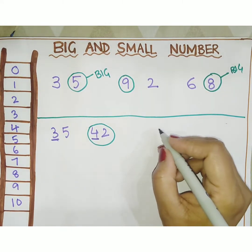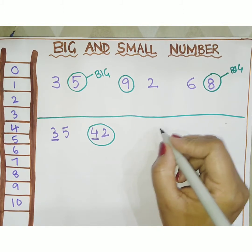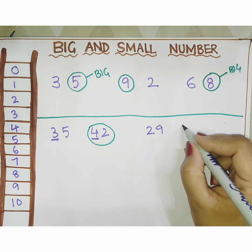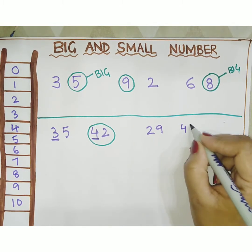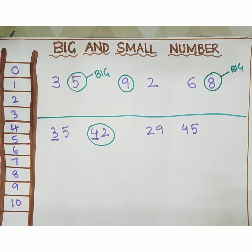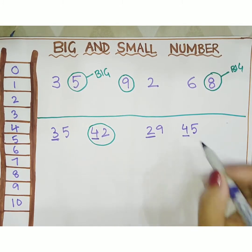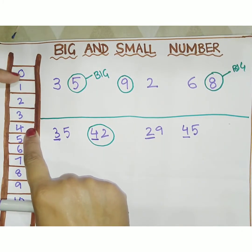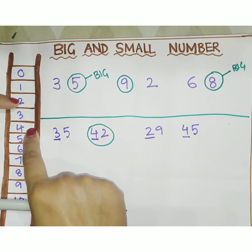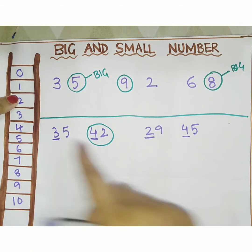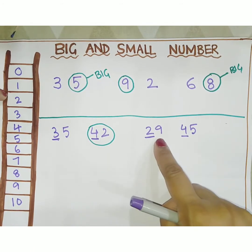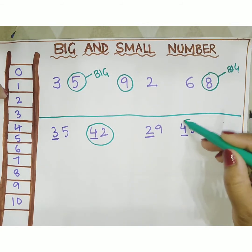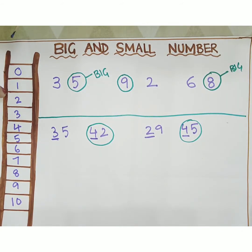Let's understand with one more example. Suppose the numbers are 29 and 45. Let's compare the first digit. 2 is here and 4 is here. If we move forward, 2 comes first. It means 29 is the small number and 45 is the big number.